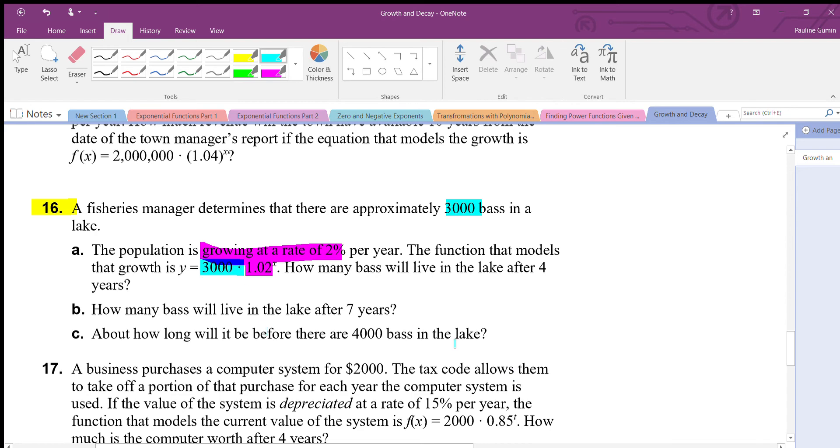How many bass will live in the lake after four years? What we need to enter in our calculator is three thousand times 1.02 to the power of four. Remember, the first thing you should be doing is entering 1.02 to the power of four, then you multiply by three thousand. We have an answer of three thousand two hundred forty seven bass. Now we do have a decimal, but there's no such thing as 0.29 fish. We're gonna round down, we can't have parts of fishes.